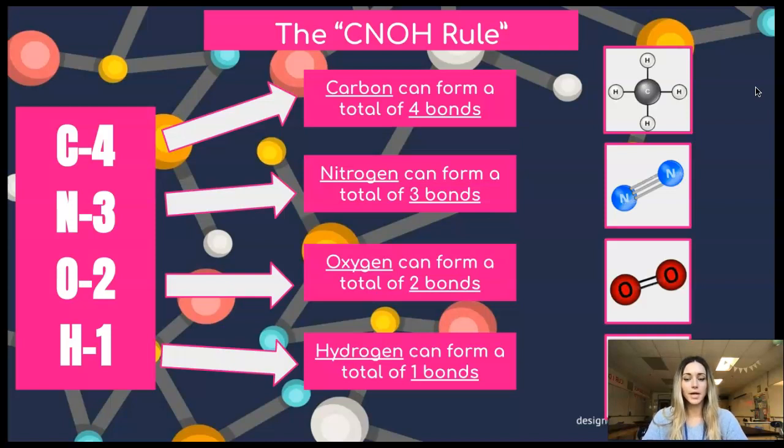So C representing four, N-3, O-2, and H-1. The CNOH rule helps us to remember the number of bonds that each one of these common elements is able to form.